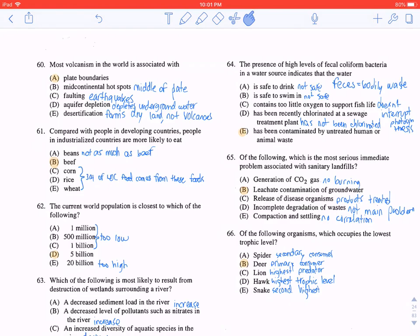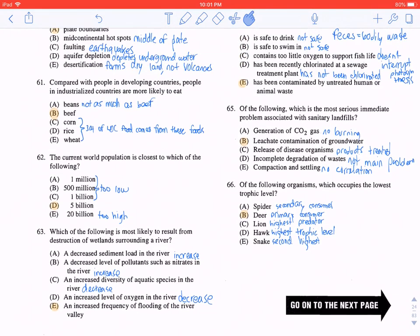For C, it does not interrupt photosynthesis. For D, has been recently chlorinated at a sewage treatment plant. The high levels of fecal coliform bacteria indicate that it has not been chlorinated. So the only correct answer here is E.